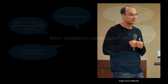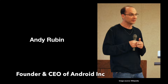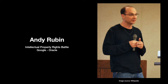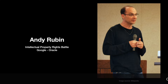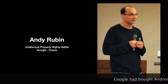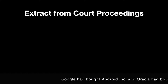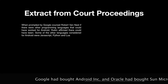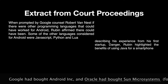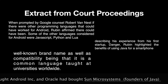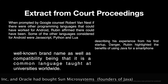He is Andy Rubin, and he has actually answered this particular question. He answered it in an intellectual property rights case that was going on in the US federal court between Google and Oracle. If you go through the documents of the court proceedings, there are some statements he makes which give us insight into why Java became the programming language for Android.